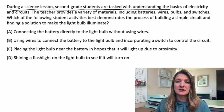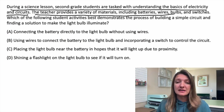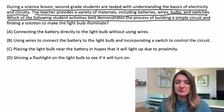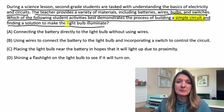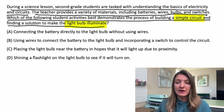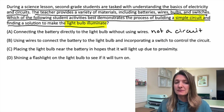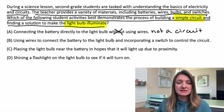During a science lesson, second grade students are tasked with understanding the basics of electricity and circuits. The teacher provides a variety of materials including batteries, wires, bulbs, and switches. Which of the following student activities best demonstrates the process of building a simple circuit and making a light bulb illuminate? Option A: connecting the battery directly to the light bulb without using wires — this is not a circuit; you're not using those wires. Option B: using wires to connect a battery to a light bulb and incorporating a switch to control the circuit — that is going to actually be a circuit.